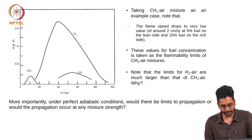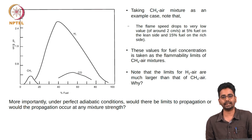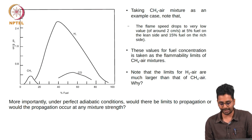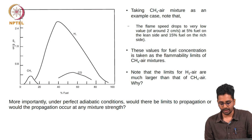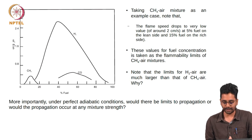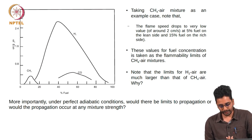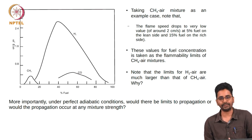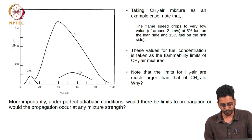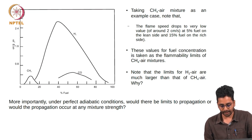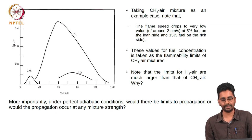Remember that stoichiometric methane-air mixture is about 9.5 percent methane and the rest is air. Note that the limits for hydrogen-air are much larger than those of CH4-air. I would like you to think about this question based on the relationship between flame speed, reactivity, and other properties that we discussed in the earlier lectures.